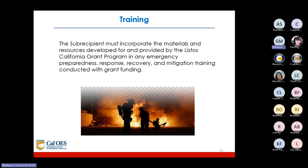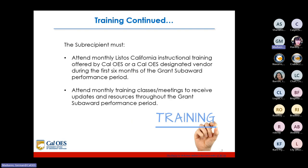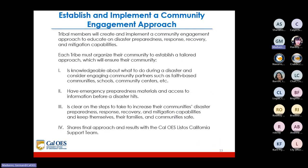The sub-recipient must incorporate materials and resources developed for and provided by the Listos California grant program in any emergency preparedness, response, recovery, and mitigation training conducted with grant funding. The sub-recipient must also attend monthly Listos California instructional training offered by CalOES or a CalOES-designated vendor during the grant sub-award performance period.